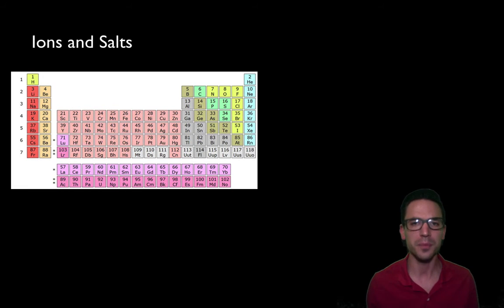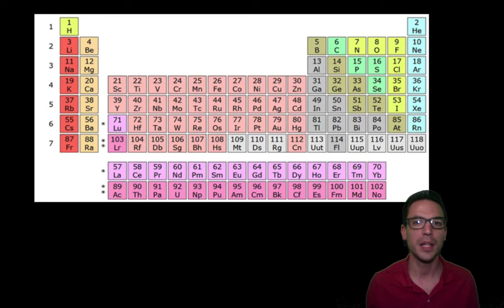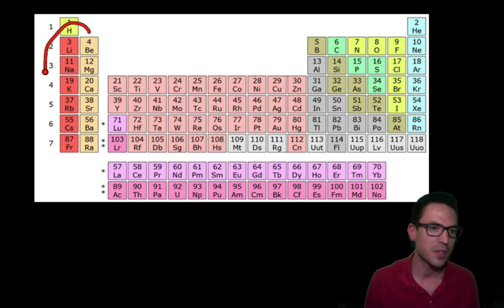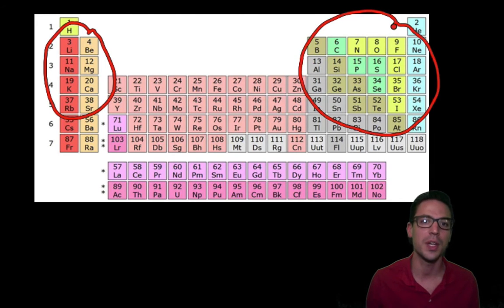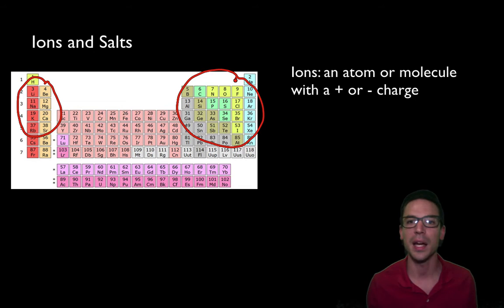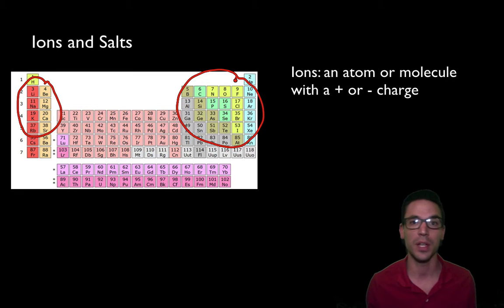Before we can talk about salinity it's important to understand what is meant by the term salt. Atoms and molecules have a tendency to either give up or gain electrons, and that gives them a charge. Atoms on the left side of the periodic table tend to lose electrons and have a positive charge, while those on the right tend to gain electrons and have a negative charge. Anytime an atom or molecule gives up or gains an electron we call these things ions — an atom or molecule with a positive or negative charge.